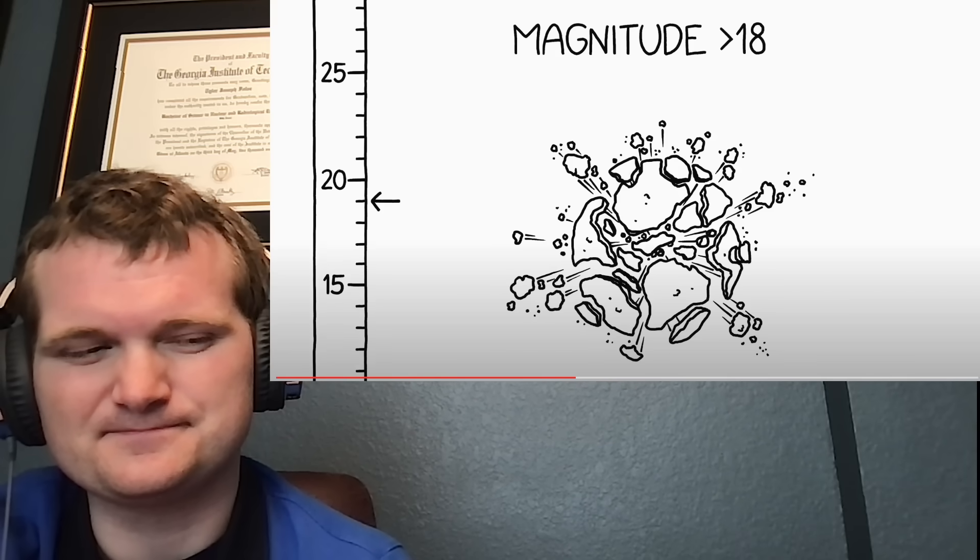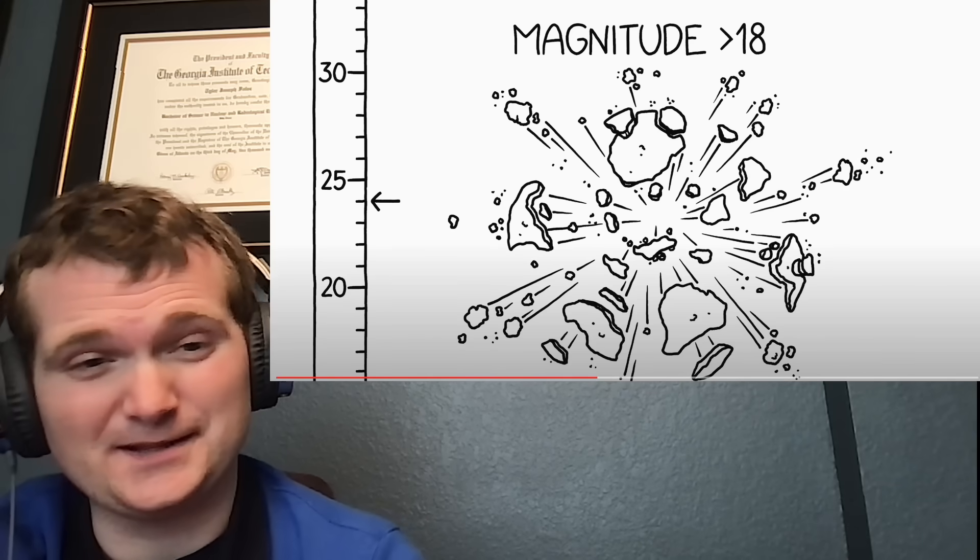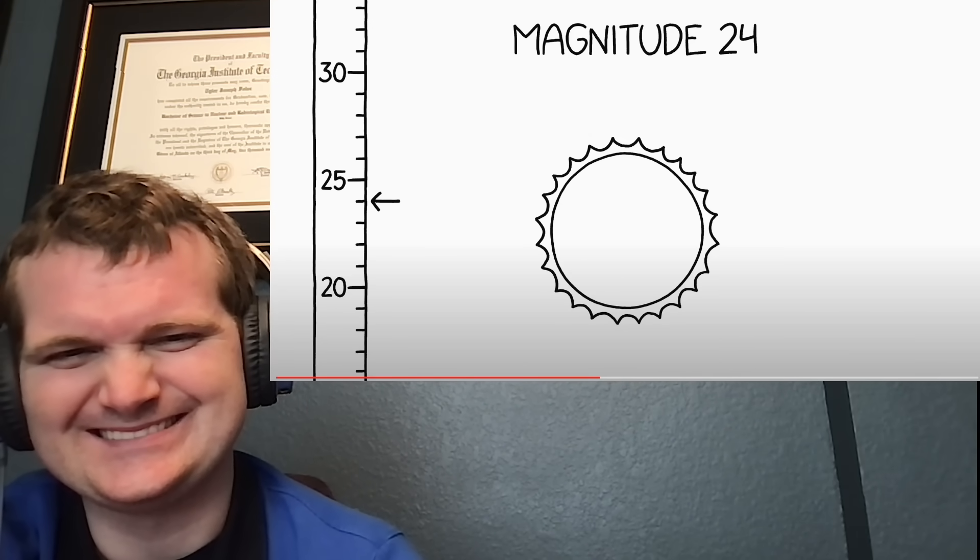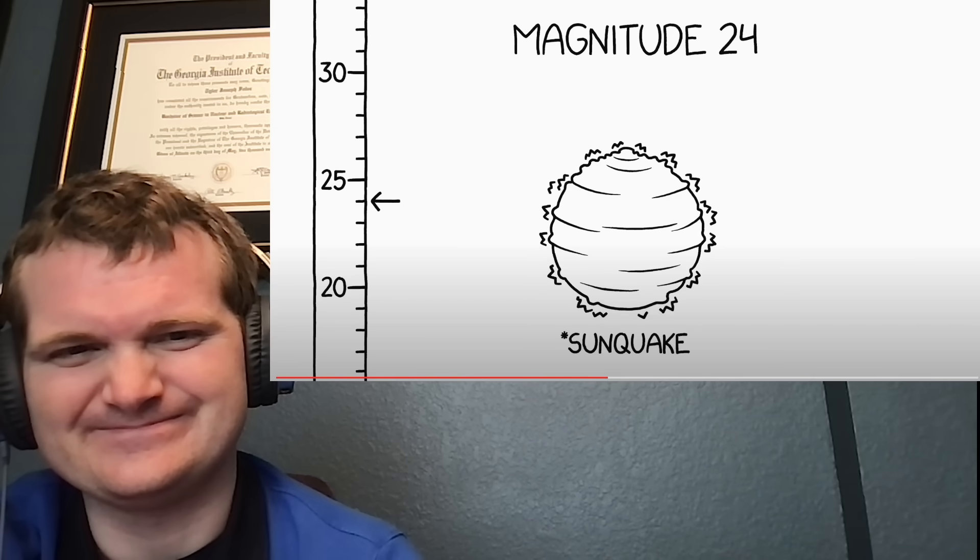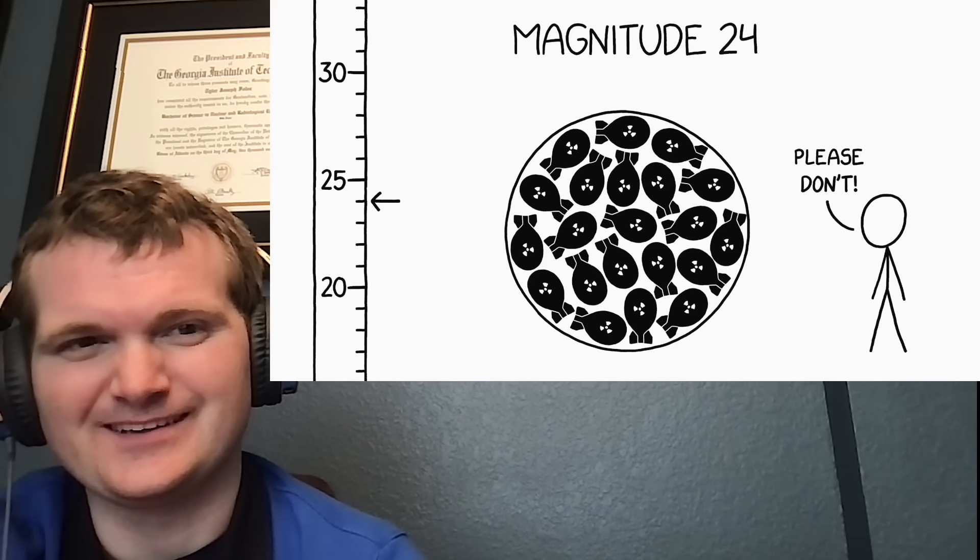You could in theory talk about a more powerful earthquake on Earth, but in practice all it would mean is that the expanding cloud of space debris would be faster and hotter, kind of like the Death Star's main weapon. The Sun, with its higher gravitational binding energy, could have up to a magnitude 24 quake. This is about the energy release you would get if you packed the entire volume of Jupiter with hydrogen bombs and detonated them all at once.